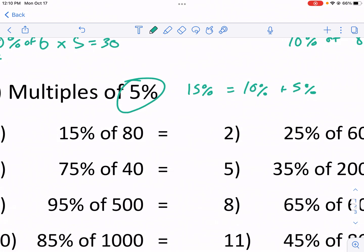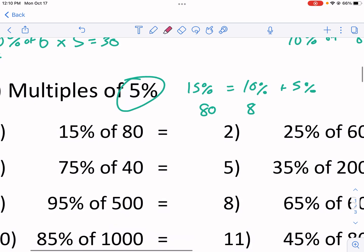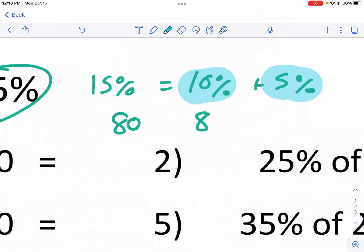Well, 10% is the easy one. So if we're talking about 80, 10% is just going to be 8. We move the decimal place over once. Now, 5%, as you guys might be able to tell, is half of 10%. So what I can do is, if I know 10% is 8, then I know half of that is 4. Now we just have the problem 8 plus 4.